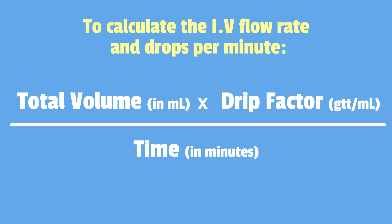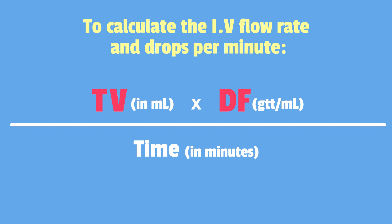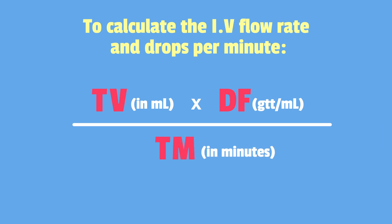Here's a mnemonic to help you remember: think 'TV makes you death over time.' TV stands for total volume, death stands for drip factor, over means divided by, and time is for time prescribed.